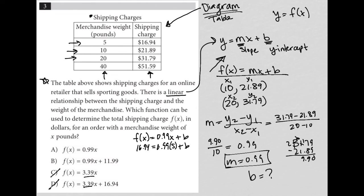I can tell already that the answer is going to be B. Because for A, there isn't a Y intercept. And here we're definitely going to get B equal something. 0.99 times 5, when I subtract that from both sides, is not going to cancel out the 16.94. So I get something there and there's no need for me to continue on because B must be the correct answer there.